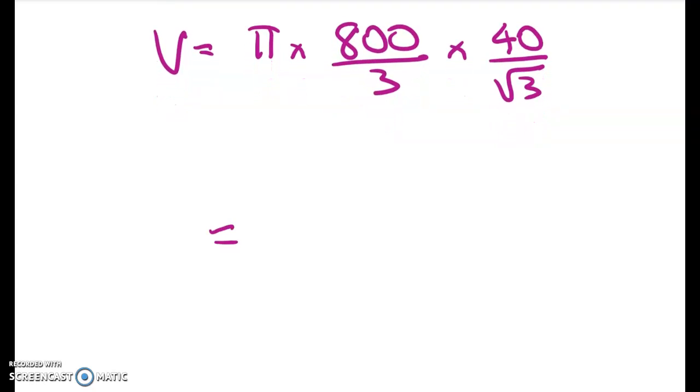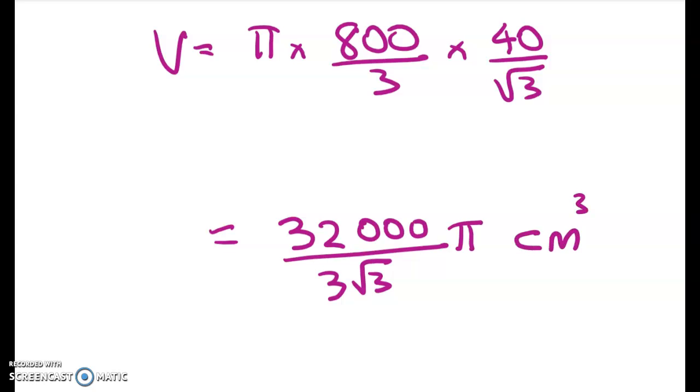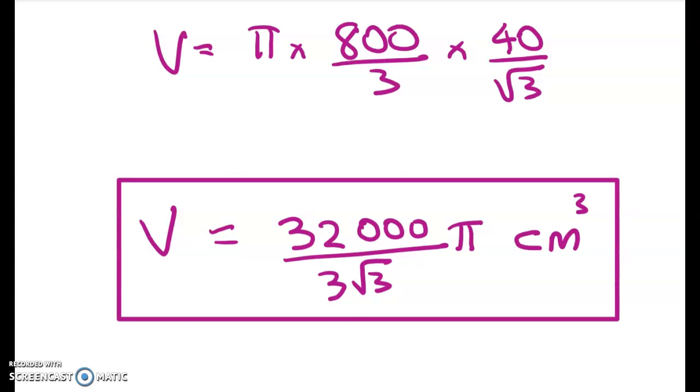Giving us, let's see, 32,000 over 3 root 3 pi, and my unit is going to be centimeters cubed. Now I haven't gone ahead and done that as an exact value, but you should. I just didn't have a calculator nearby, and I'm not going to attempt to do that in my head. So that's that question done. And we don't need to prove that the volume we've found is a maximum.